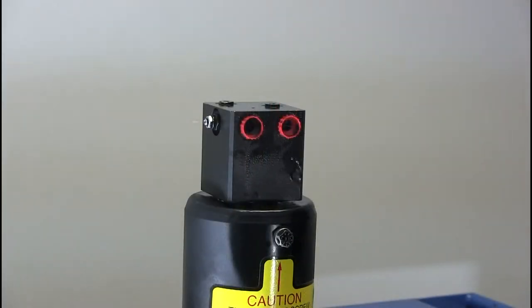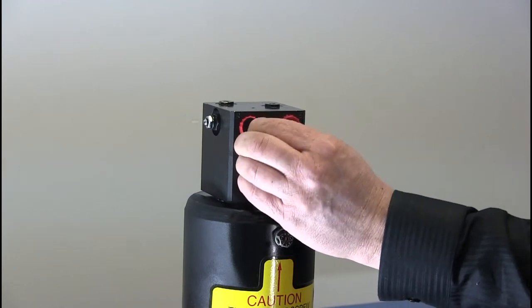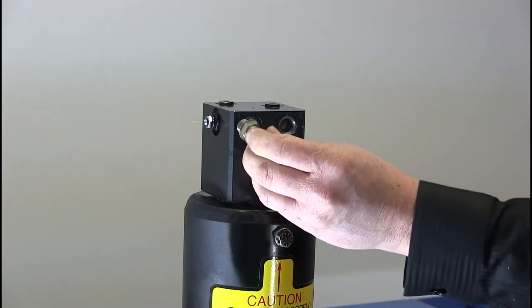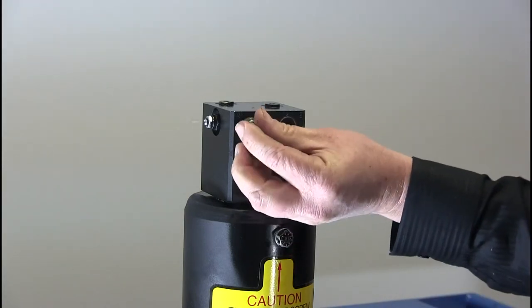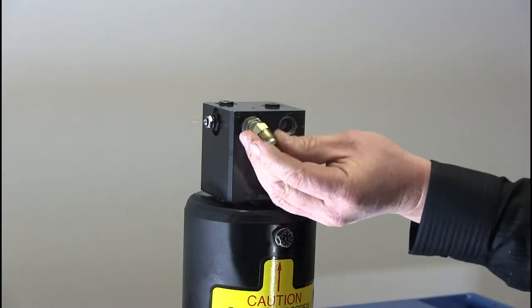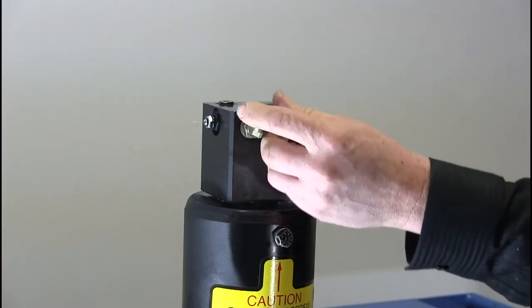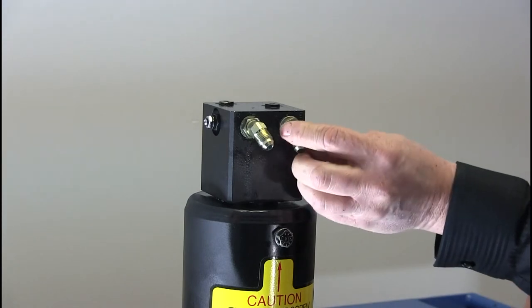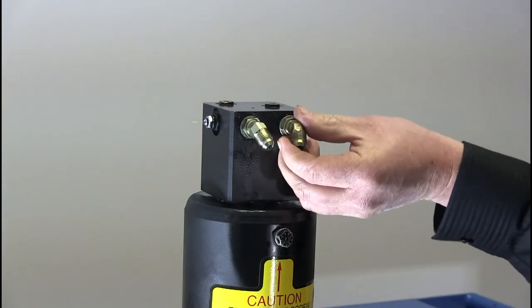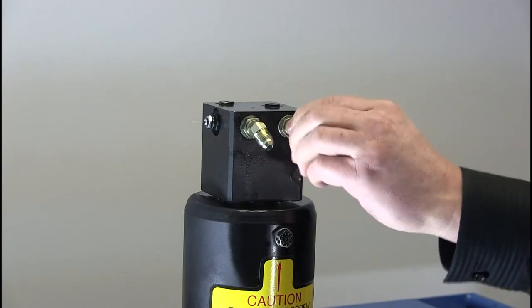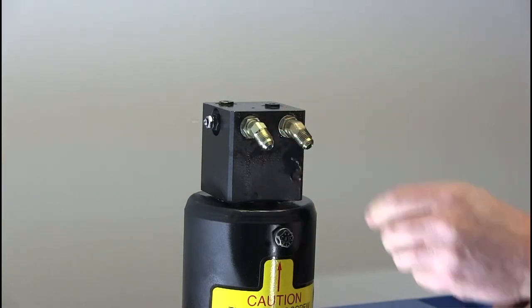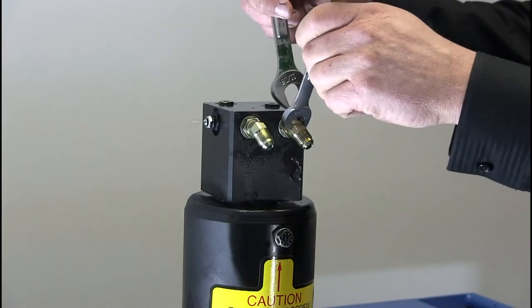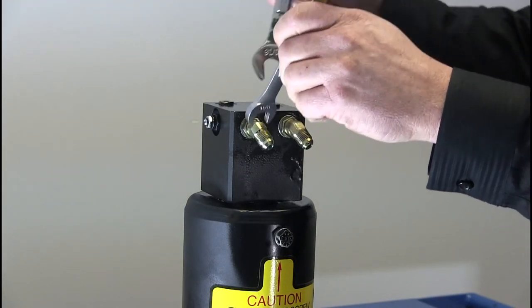We now replace the fittings and hoses. Remove the plugs out of the valve block. Screw the fittings in. Holding the fitting with the 9/16 wrench, use the 11/16 to tighten the jam nut.